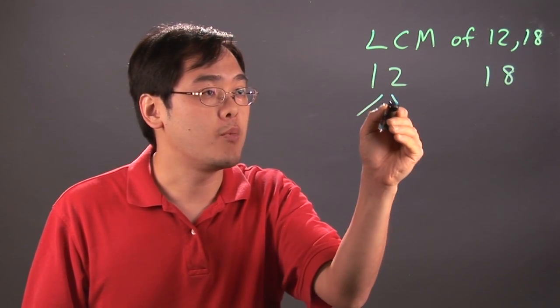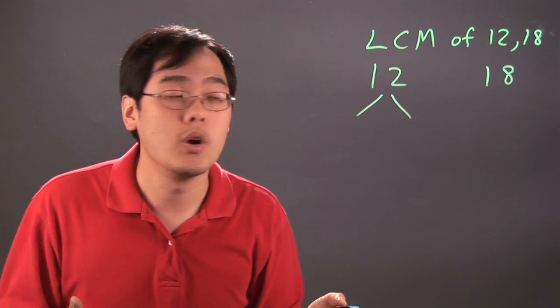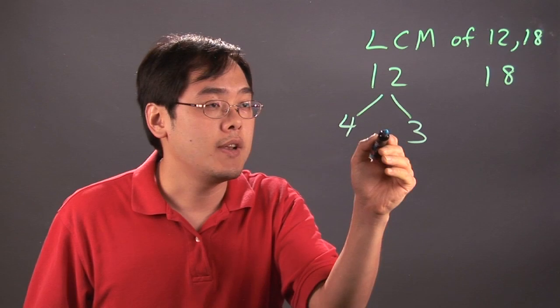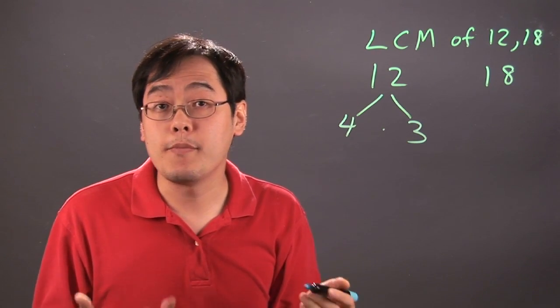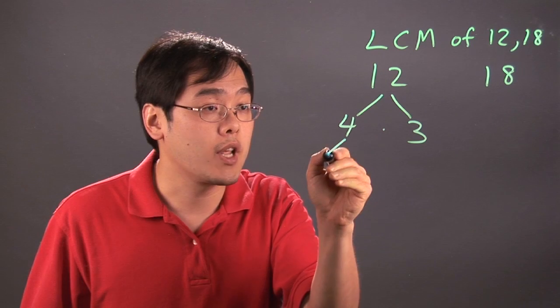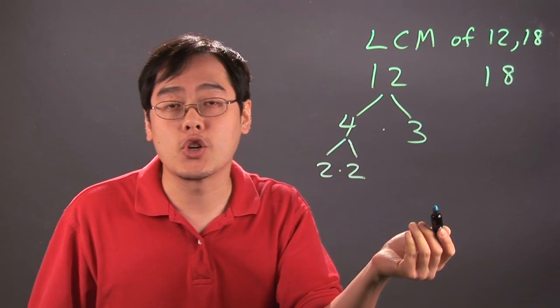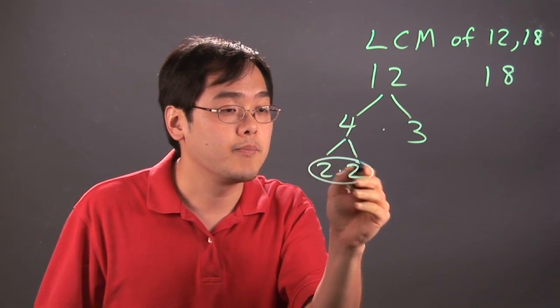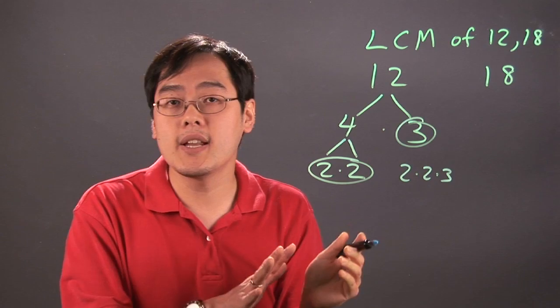Now with 12, you break it up this way. You can think of any two numbers that multiply to give you 12 and you'll be good to go. So most people often think of 4 times 3. Now what you do after that is see if you can break down each number further, if possible. Now 4 can be thought of as 2 times 2. 3, that's about as good as it gets. So the factorization of 12 is really 2 times 2 times 3. You're going to leave that aside for right now.